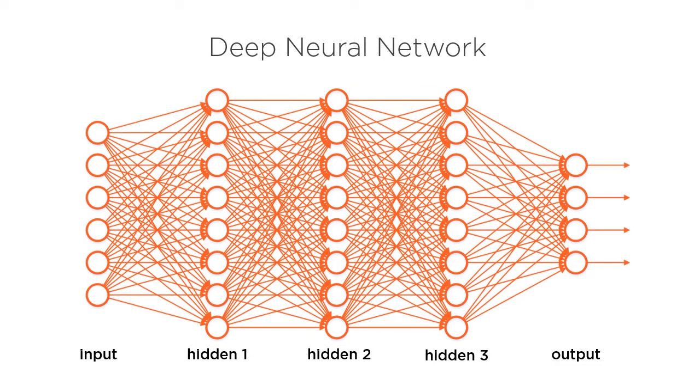A deep neural network is a neural network with more than one hidden layer. Adding more hidden layers allows the network to model progressively more complex functions.